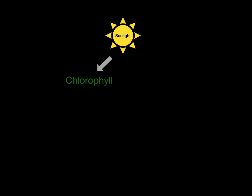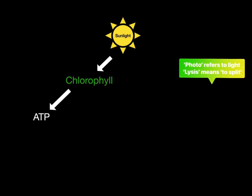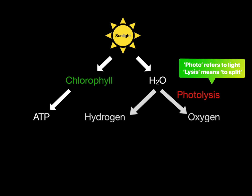The light that shines on a plant is absorbed by chlorophyll, initiating reactions that produce ATP. The light is also used to split water into hydrogen and oxygen in a process known as photolysis.